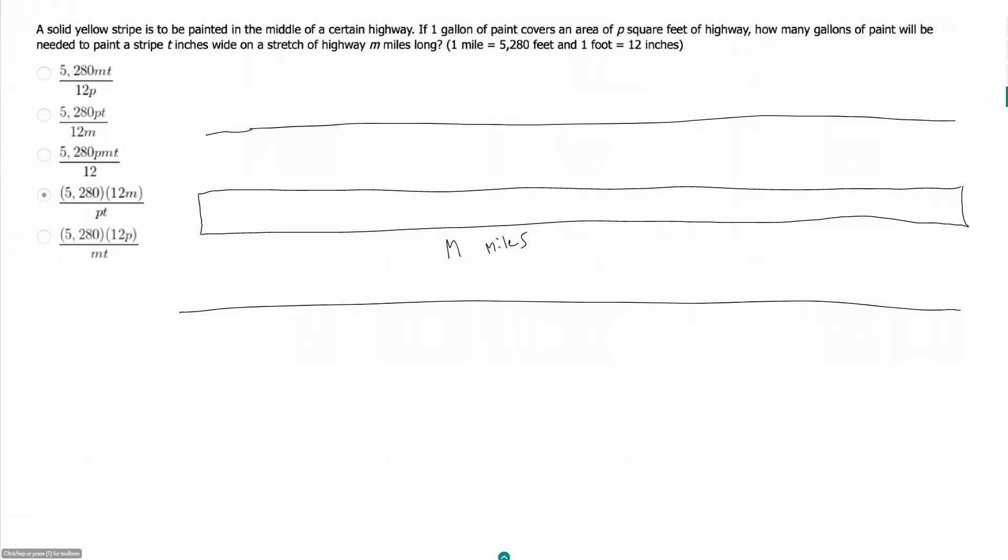So I have m miles and I have t inches, and so t inches will be t over 12 feet. If I want to convert miles to feet, I need to multiply by 5,280. So m miles is going to be 5,280 m feet.